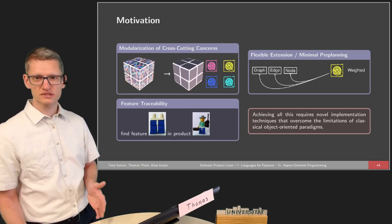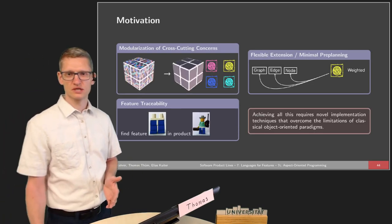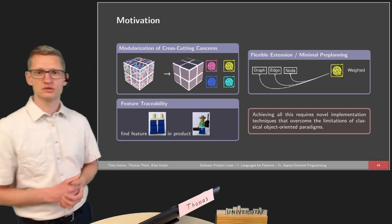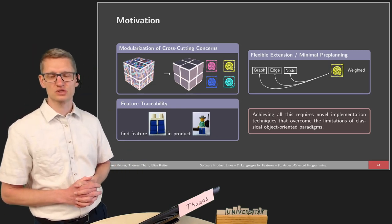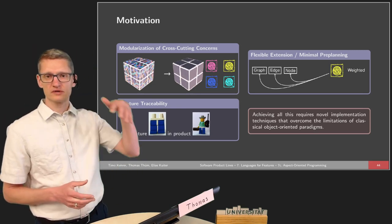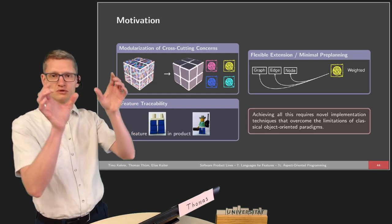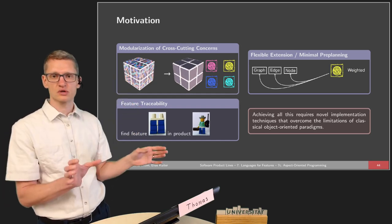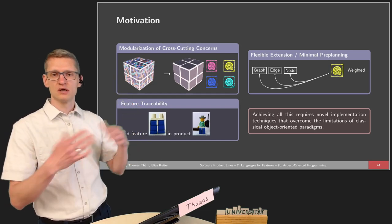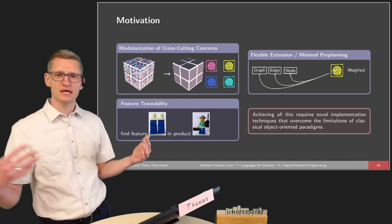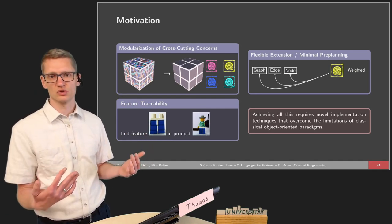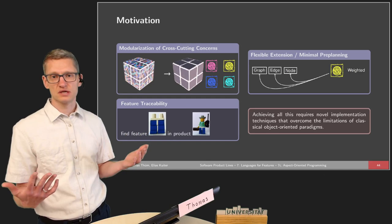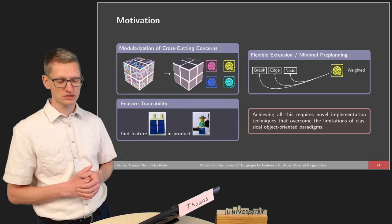We have cross-cutting concerns in our systems due to the tyranny of the dominant decomposition. We will always have a dominant decomposition — we decompose our system in a certain design and then there will be something that is cross-cutting to this modular structure. We've seen this for arithmetic expressions.